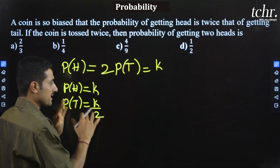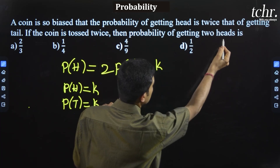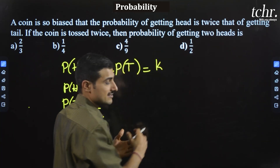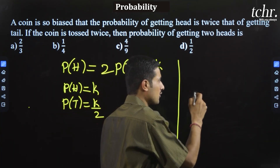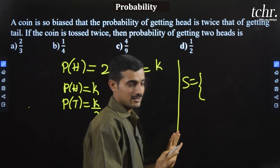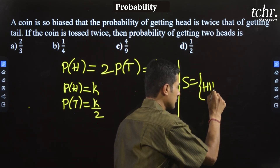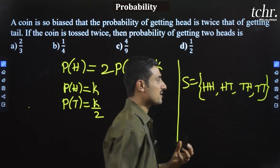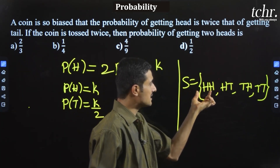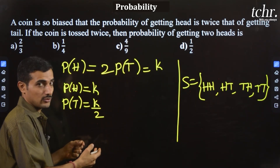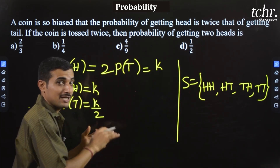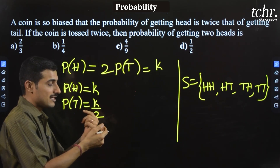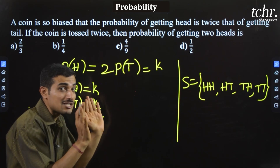Now decoding the information: if the coin is tossed twice, the probability of getting two heads is asked. The sample space for two tosses is: head-head, head-tail, tail-head, and tail-tail. Getting two heads means head comes the first time and head comes the second time. These two events are independent — this is not conditional probability.